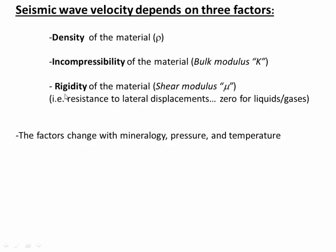Those are physical properties of a material. Translating that into geology, rocks that have different mineralogy or are at different pressure or temperature will have different density, incompressibility, and rigidity. So depending on what your rock is made of, what pressure it's under, and how hot it is are big factors. In particular, hotter rocks tend to be less dense and more compressible, so hotter rocks tend to have slower velocities, all else being equal. In contrast, rocks that are under higher pressure tend to be more dense and less compressible, so higher pressure tends to make waves pass through faster.